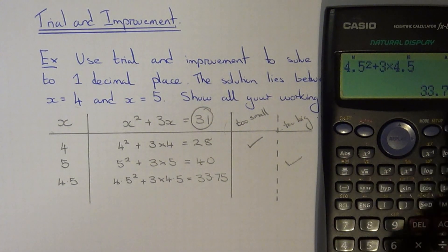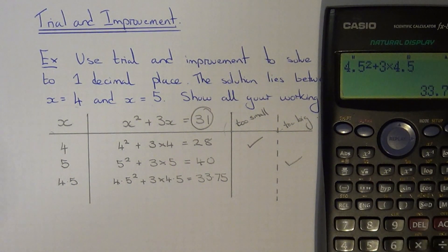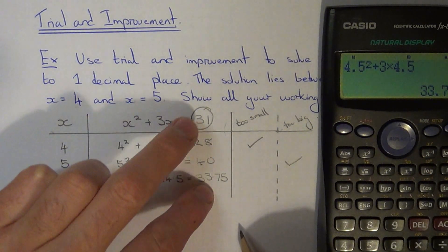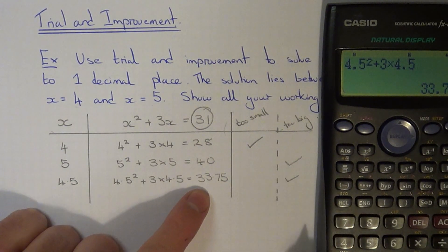There's no need to round these decimals off. Just write down what you get on your calculator. So 33.75 is over 31. So that's too big.